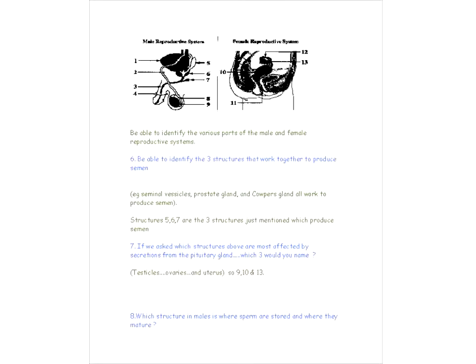We're going to go over some different parts of the male and female reproductive systems. Just know which three structures work together to produce semen: the seminal vesicles, the prostate gland, and the Cowper's gland — that's going to be structures five, six, and seven. Be able to label those and know those are the three structures that produce semen.